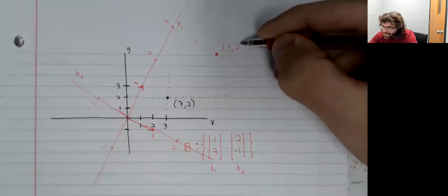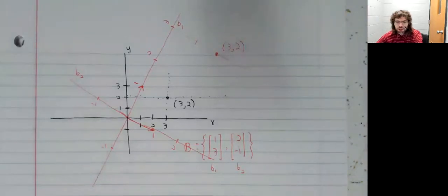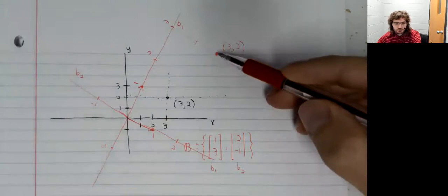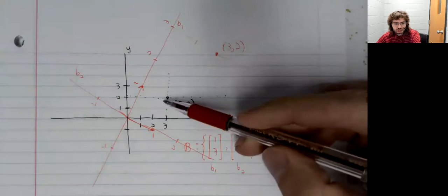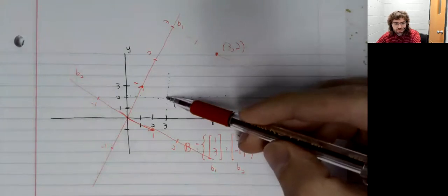Suddenly three comma two is all the way over here. And what's this point?